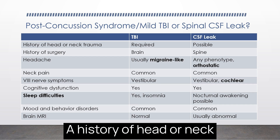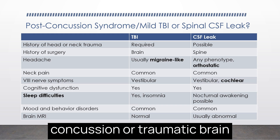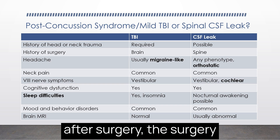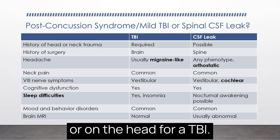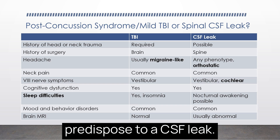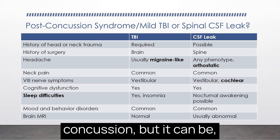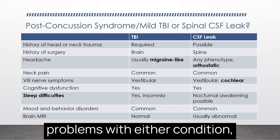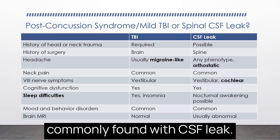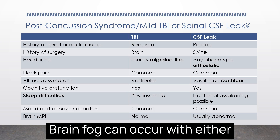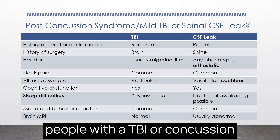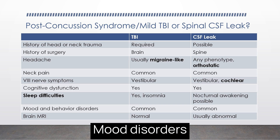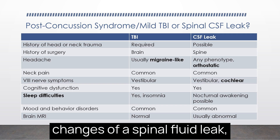How are we going to sort this out? A history of head or neck trauma is required for either concussion or TBI, but many people with a CSF leak also have symptoms that start after head or neck trauma. If symptoms start after surgery, it should be brain or head surgery for a TBI, but surgery on the spine can predispose to a CSF leak. The headache is typically migraine-like for a concussion but orthostatic with a CSF leak. Trouble with hearing and tinnitus are more commonly found with CSF leak. People with a TBI or concussion typically experience insomnia, whereas those with a CSF leak may wake up in the middle of the night with headache. If the brain MRI shows changes of a spinal fluid leak, then we have a home run.